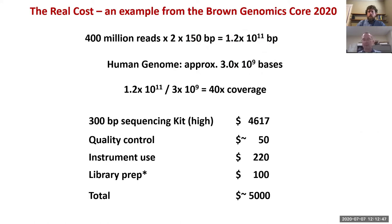For pricing, if you put the different components together: the sequencing kit in the high output version costs about $4,617, quality control is about $50, instrument use is $220, and library prep depends on which reagents you use but is about $100. So you end up with about $5,000 for the 40x coverage.